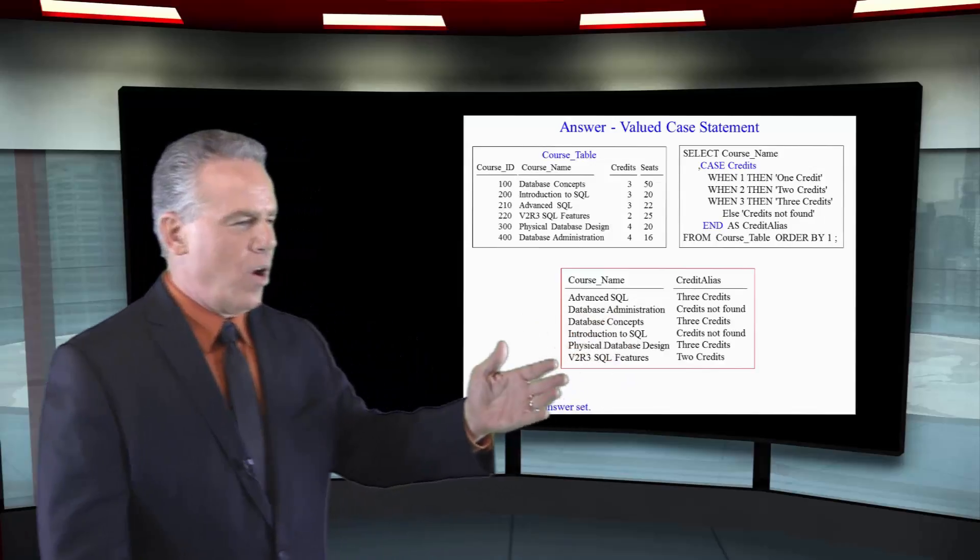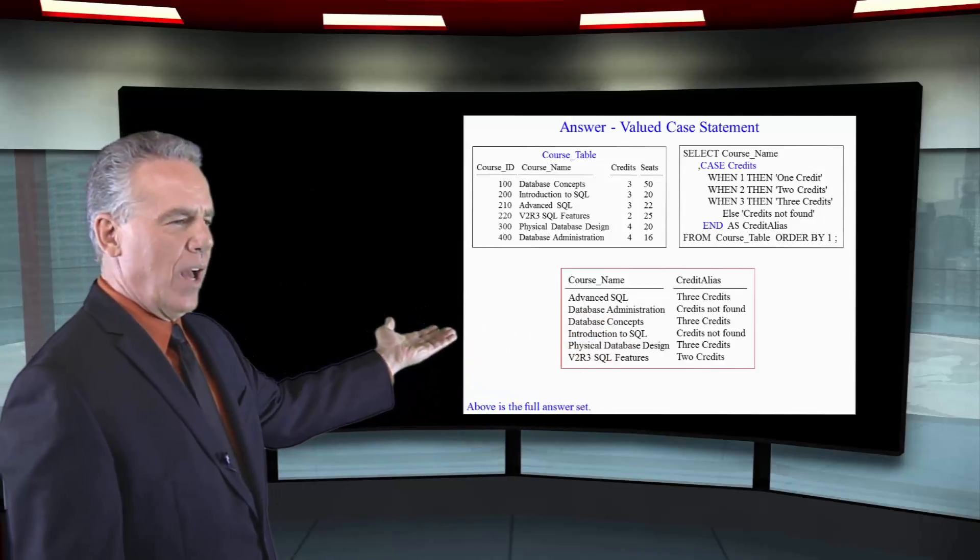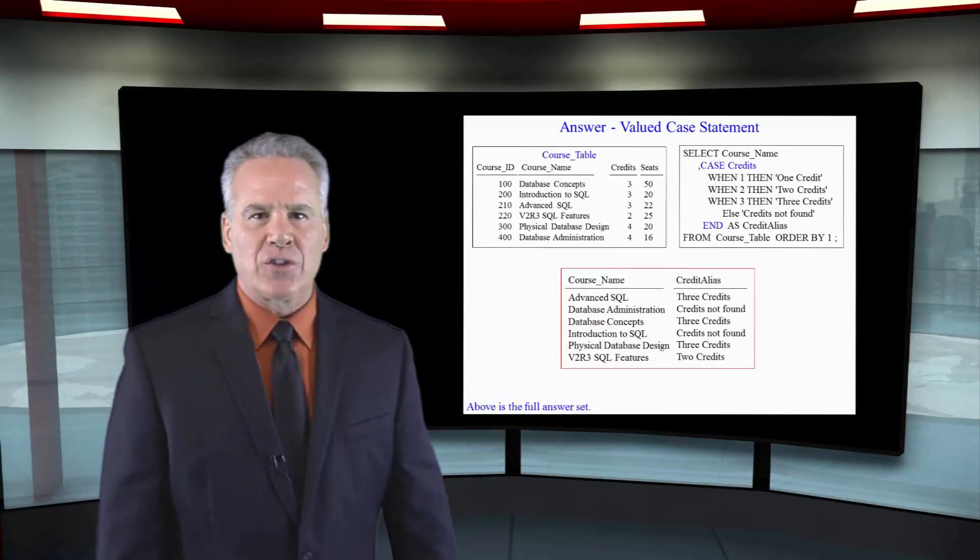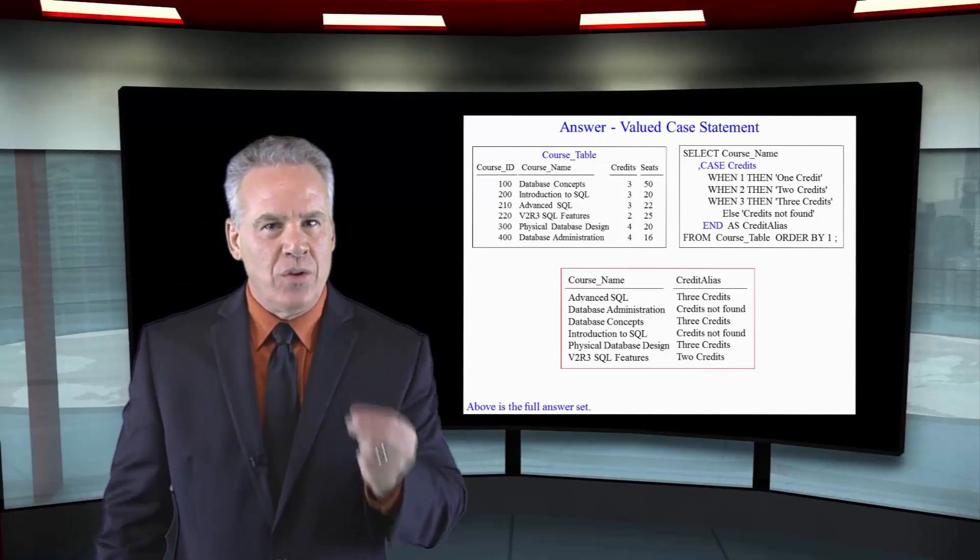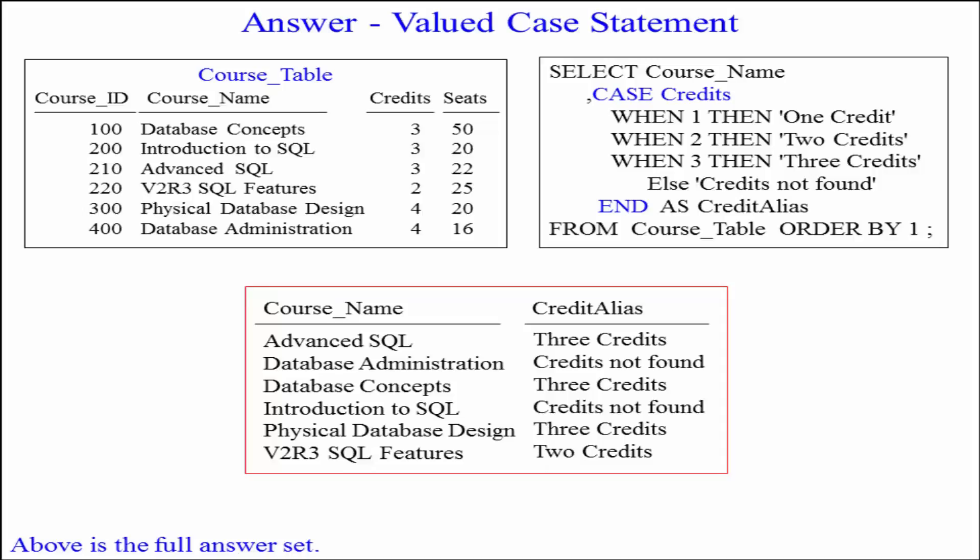Let's look at the first row and we say it's Advanced SQL and we happen to know that that is three credits. Here's the way it's going to work inside the case statement. We're using a valued case of credits. So, is it equal to one? No.